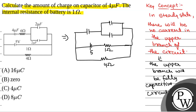So the net resistance is 5 ohm, because these two resistances are in series, and the resistance in series is given by R1 plus R2. So the net current I will be equal to 5 volt divided by 5 ohm, that is 1 ampere.